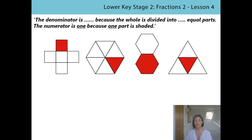Before we carry on with the learning, let's just recap what we were doing yesterday. You were really good at writing those fractions out. Remember you did it in three parts: first of all, you had to draw the division bar to show the division relationship between the whole and the parts. Then you had to write the denominator, and then finally you wrote the numerator. We're going to be using these stem sentences to describe the denominator and numerator, and it's a good way of checking you've got the right one as well.